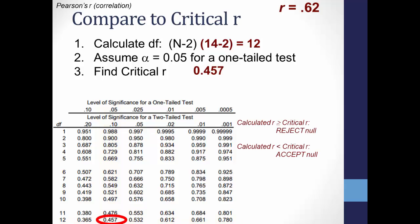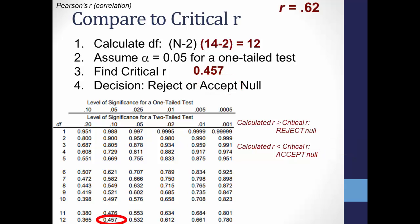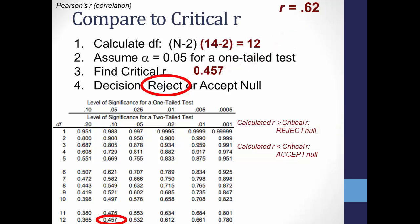If our calculated statistic is equal to or higher than the critical value, you reject the null hypothesis; if it is less than the critical value, you accept the null hypothesis. In this case, 0.62 is greater than the 0.457 critical value, meaning that we reject the null in favor of the alternative hypothesis. We would conclude that we're 95% sure that the number of hours studying for an exam does, in fact, positively correlate with scores on the exam.